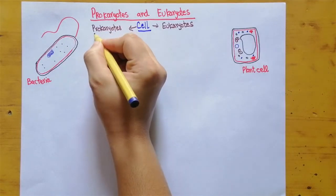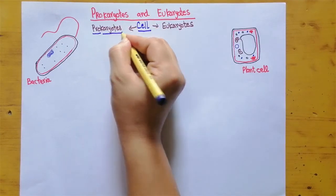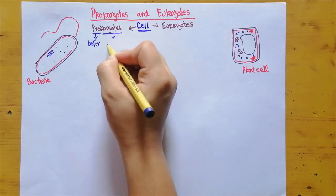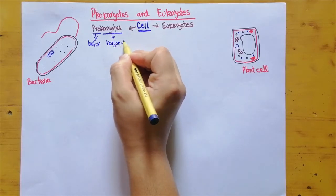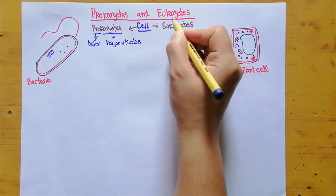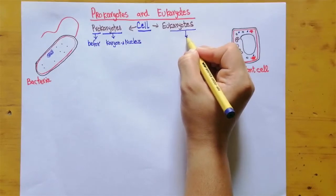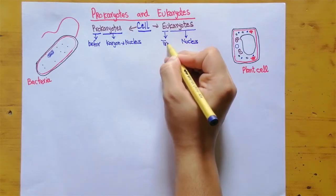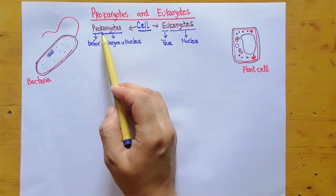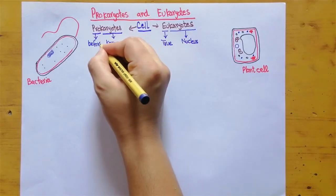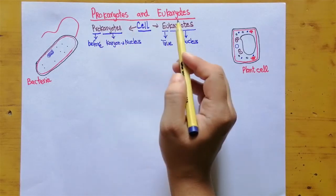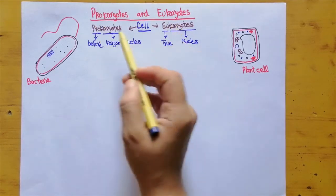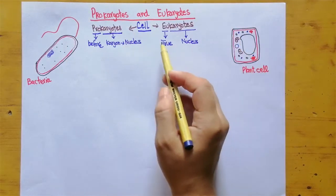Here we have 'pro' and 'karyon'. The word 'pro' means before, and 'karyon' comes from the Greek word meaning nucleus. Similarly, in eukaryotes, 'eu' means true. In other words, prokaryotes are organisms which came before the nucleus — they came before the development of a true nucleus, which is why they do not have a nucleus.